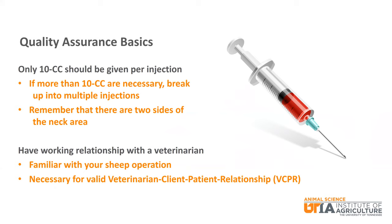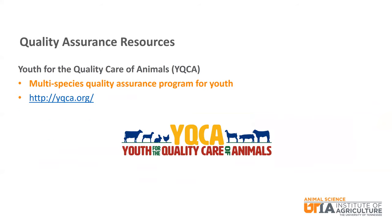It is important to have a working relationship with a veterinarian and for them to be familiar with your sheep operation. This is necessary for a valid vet-client-patient relationship, or VCPR. For more sheep quality assurance resources, please check out the YQCA program at yqca.org. YQCA is a multi-species quality assurance program for youth. YQCA certification is required for many regional, state, and national shows, including state 4-H and FFA livestock shows in Tennessee.